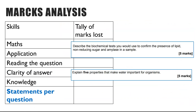The last skill is Statements per question. As it suggests, it's if you didn't write enough correct points. You may have had really good clarity in your answer and read the question correctly, however you only gave three properties of water, or you forgot to talk about or ran out of time discussing amylase. That would be tallied in the statements per question column.